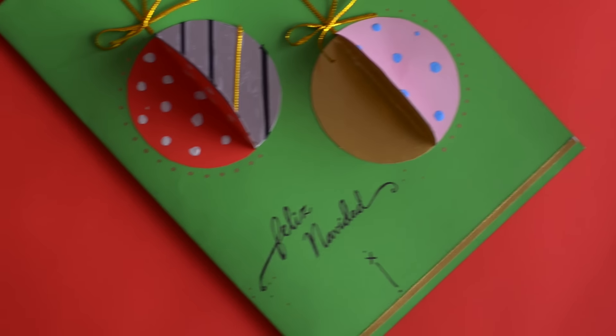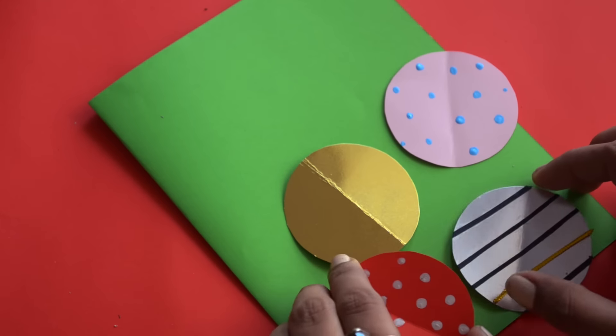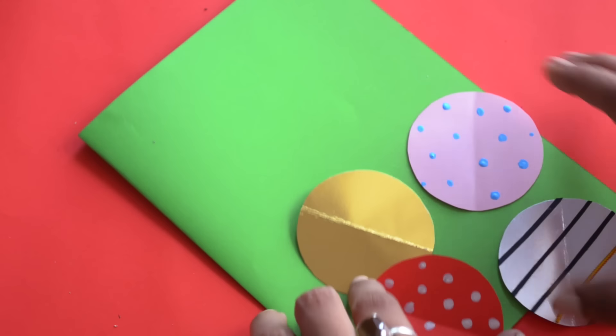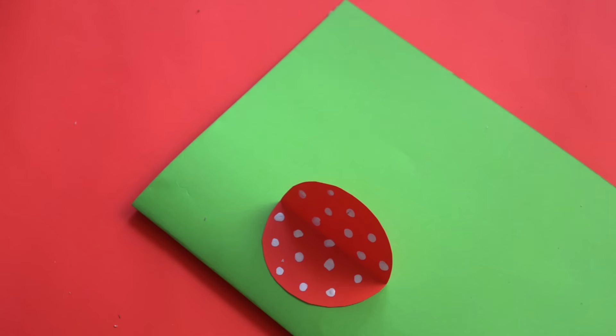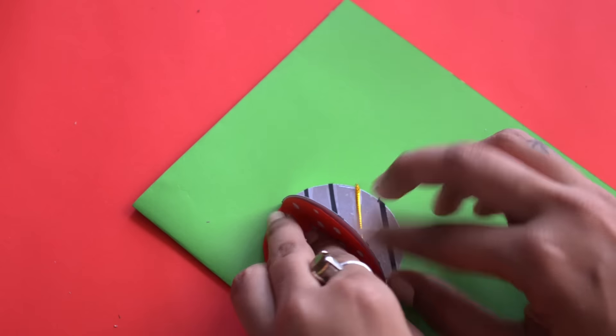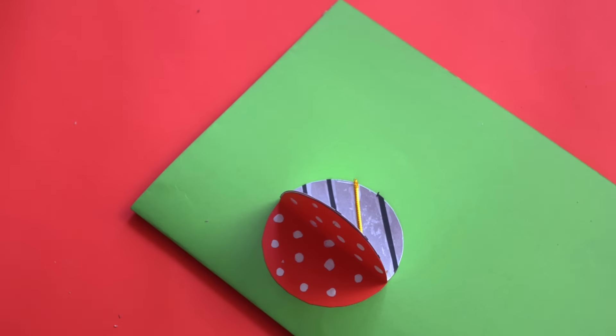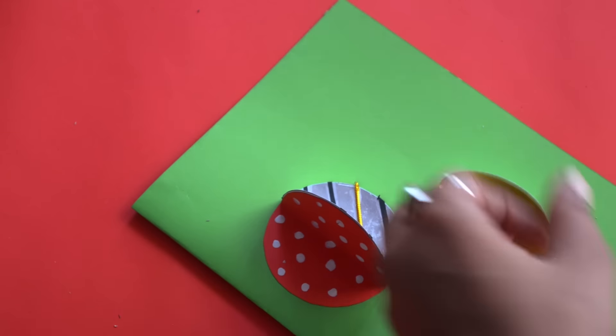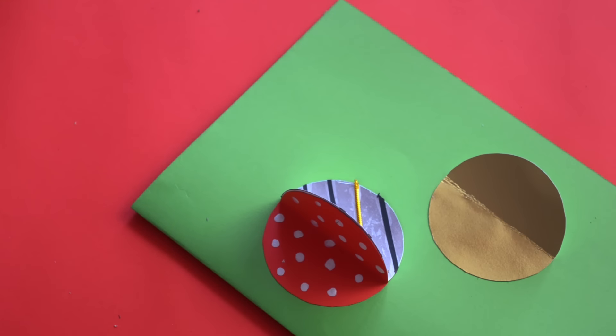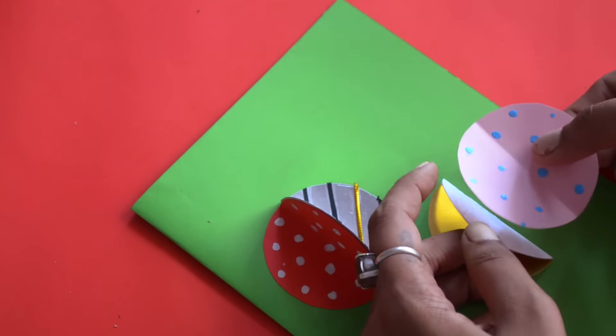Last card is also a 3D card and for this I cut out 4 circular patterns and folded them into half. Then I stuck them on the card like so, added some strings and bows, some lettering and that's pretty much it.